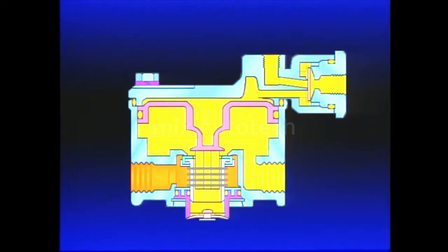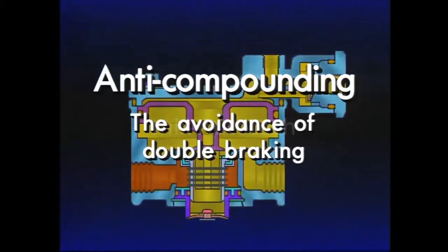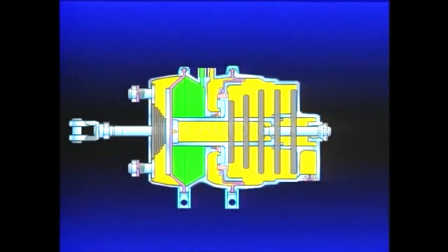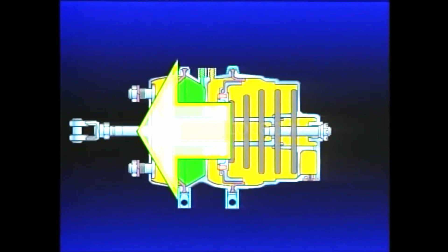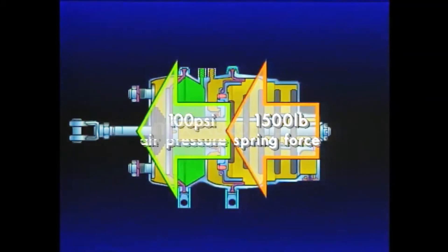Anti-compounding, simply defined, means the avoidance of double braking. It prevents the simultaneous application of service brakes and emergency or parking brakes. The compounding of spring force and air pressure creates too much force that could possibly damage brake components.